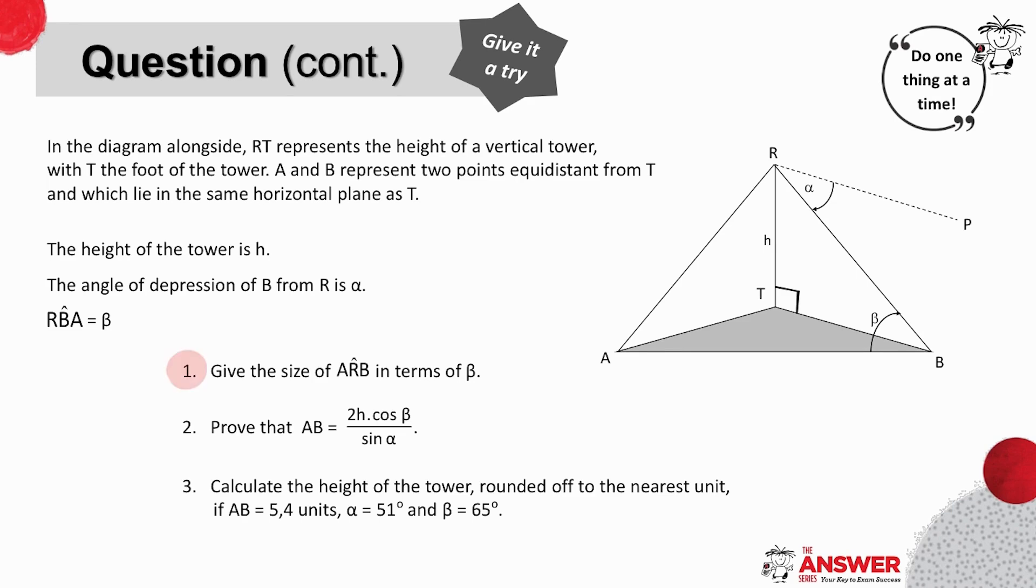First, we have to give the size of the angle ARB in terms of beta. So here they are guiding us with what groundwork needs to be done. Make sure to read your question again to see what info they give you to help with this first part.